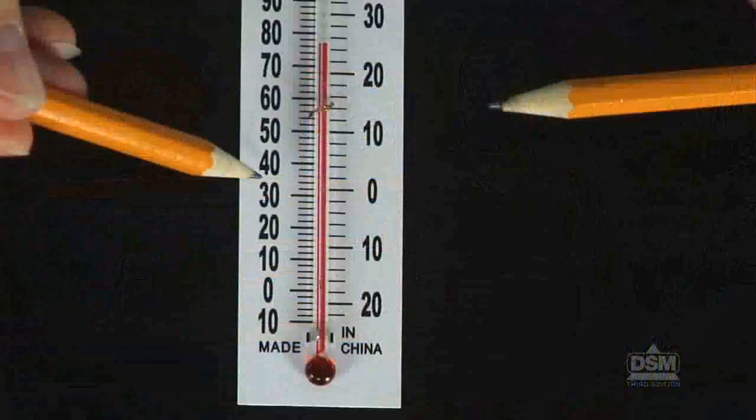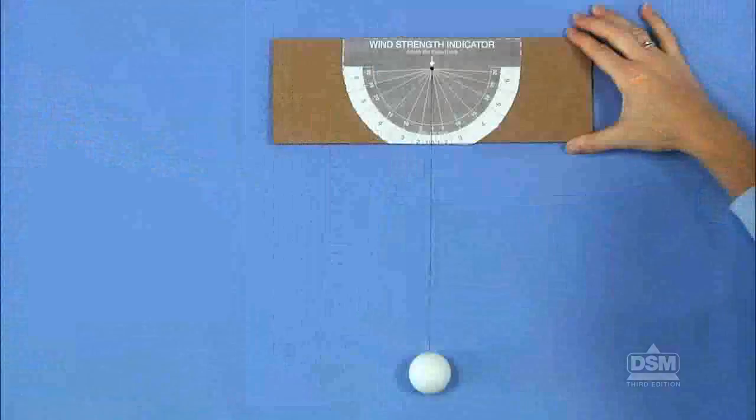Students explore weather instruments with 12 hands-on activities and the Delta Science Reader. They first measure weather conditions using kit tools and devices of their own making.